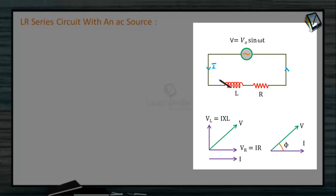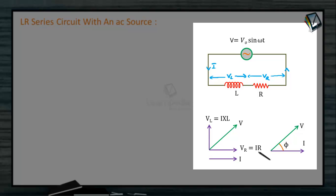If the current flowing in the circuit is I, the potential difference across the inductor is VL and across the resistor is VR. In the phasor diagram, VR is in the direction of I, and VL is perpendicular to the direction of I. The resultant voltage V is the vector sum, at an angle φ from the current direction.